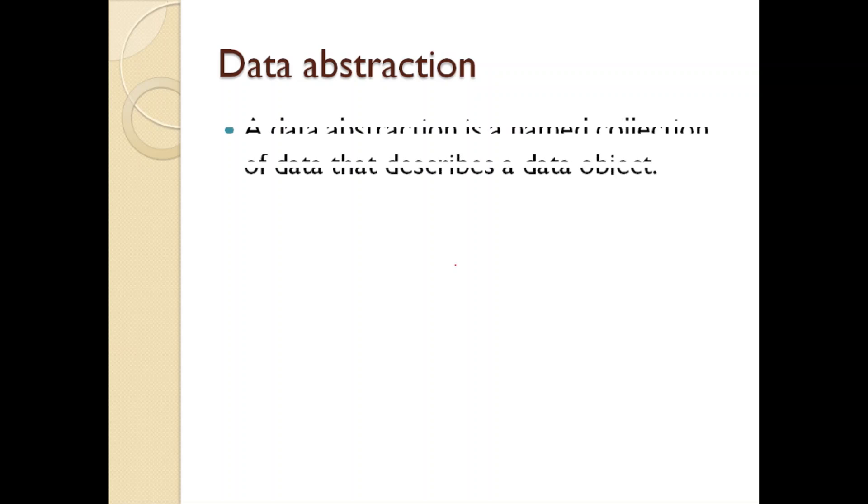Next one is data abstraction. Data abstraction is a named collection of data that describes a data object. For example, in the context of the procedural abstraction eat, we can define a data abstraction fruit, like any data object of concern.